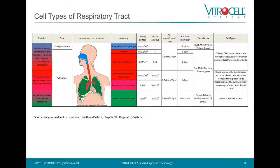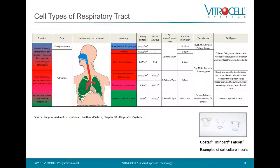This leads us to the question which cell types of the respiratory tract are relevant to exposure. Basically, you have the whole range of cells from the tract starting at the nose, going to the bronchi, and then also ending in the alveolar region of the lung. In each region you have different cell types, and those cell types can be cultivated on cell culture inserts. Here you see three examples of commercial brands where those cells are seeded, grown, and made ready for exposure.